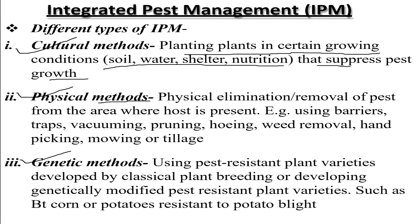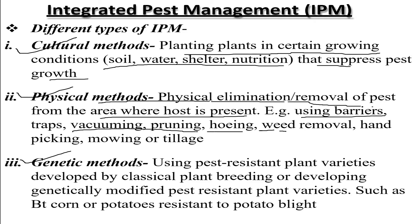The physical method involves physical elimination or removal of pests from the area where the host is present, using techniques such as barriers, traps, vacuuming, brewing, hoeing, weed removal, hand picking, mowing, or tillage — essentially freeing the host area from pests.